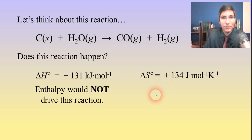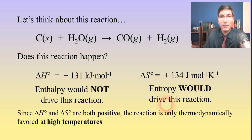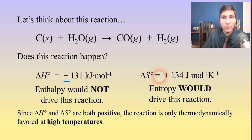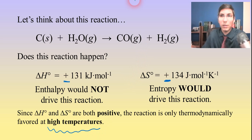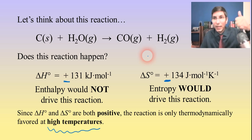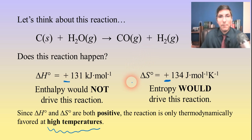Since enthalpy is positive (endothermic) and entropy is positive, the reaction is only favored at high temperatures. At relatively low temperatures like room temperature, a lump of coal exposed to steam does not undergo this reaction. But if you raise the temperature high enough, it is going to be thermodynamically favored — it will be a TFP. So we can use the delta H and the delta S values to figure out at what kinds of temperatures a reaction is driven.